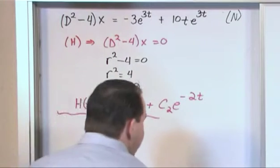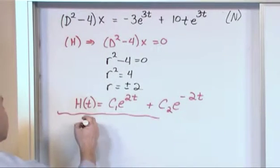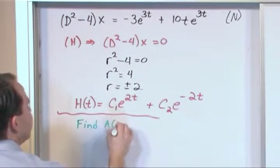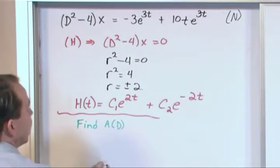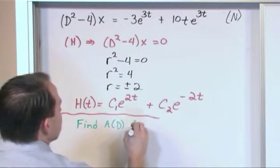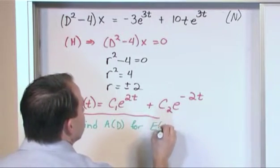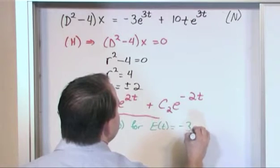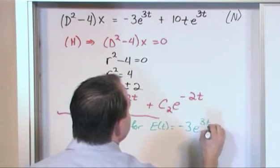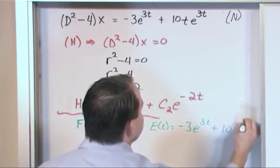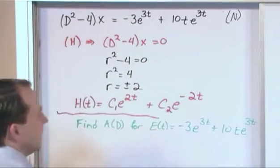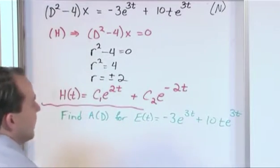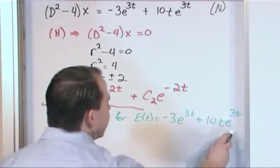All right, so the next thing we need to do is we need to find an annihilator, a of d, or some combination of derivatives basically, for e of t, which in this case is the right-hand side of the equal sign, negative 3e to the 3t plus 10te to the 3t. All right, so that's a little bit more complicated, but when you really look at it, it's not difficult to find an annihilator for this.